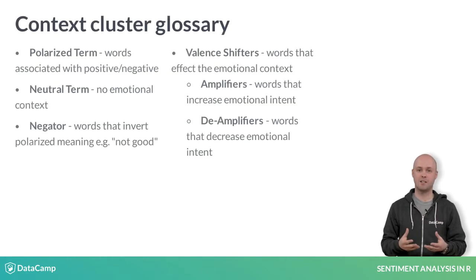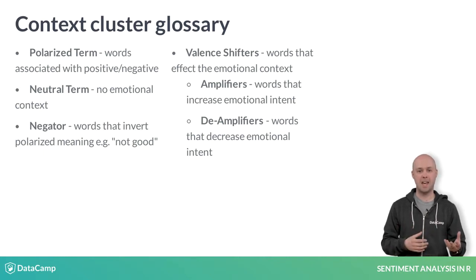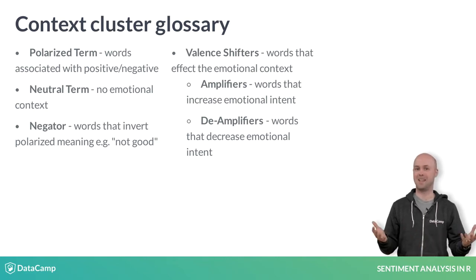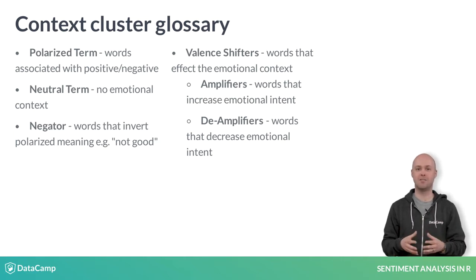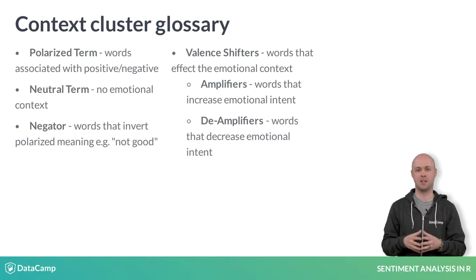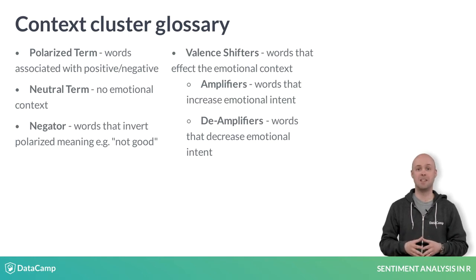Amplifiers and de-amplifiers are considered valence shifters. Valence shifters add or subtract to the author's intent. An example amplifier is 'very', as in 'Ted's voice is very nice.' The amplifier positively affects the niceness of my voice. Lastly, a negator switches the polarity of the cluster, as in 'Ted's voice is not very nice.' The amplified 'very' and positivity of 'nice' are now switched completely to not being nice at all.